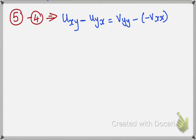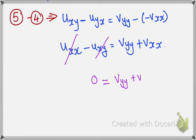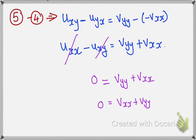Since Uxy and Uyx are the same by interchanging the order of partial differentiation, we have Uxy minus Uxy equals zero on the left side, and they cancel. Therefore, 0 equals Vyy plus Vxx. Rearranging, Vxx plus Vyy equals 0, which can be written as del squared V equals 0. The second term is also proved.